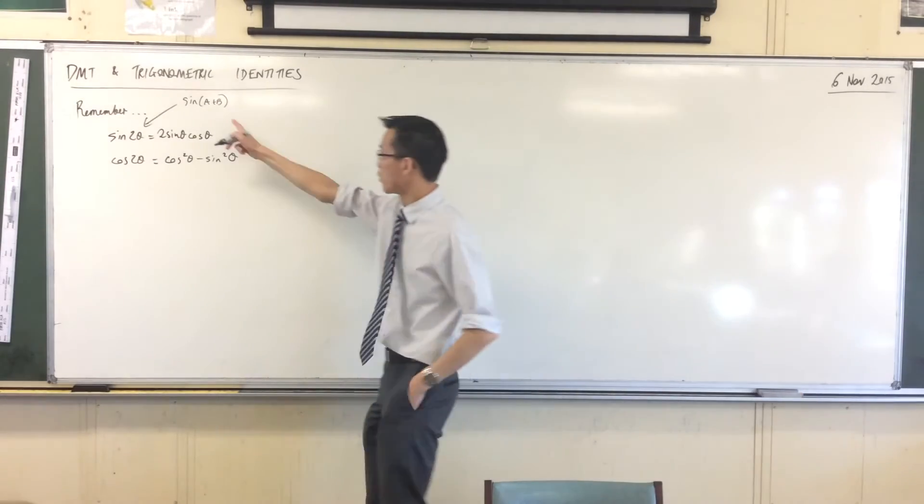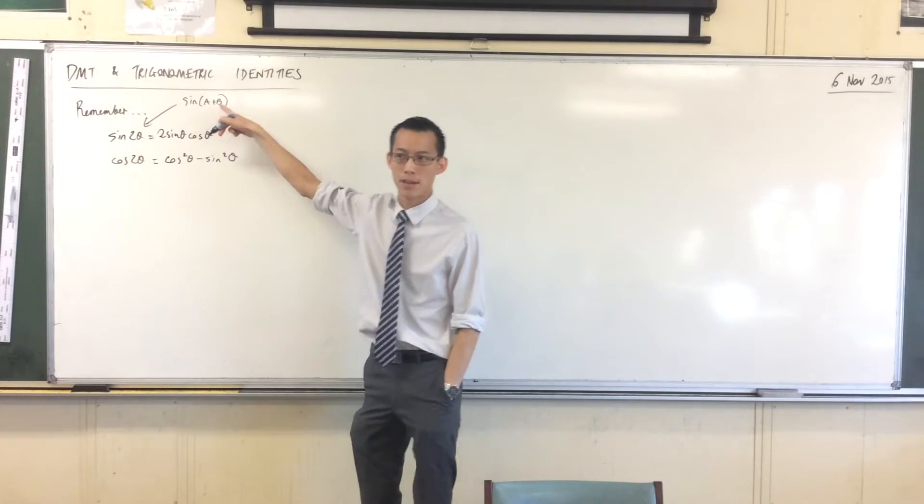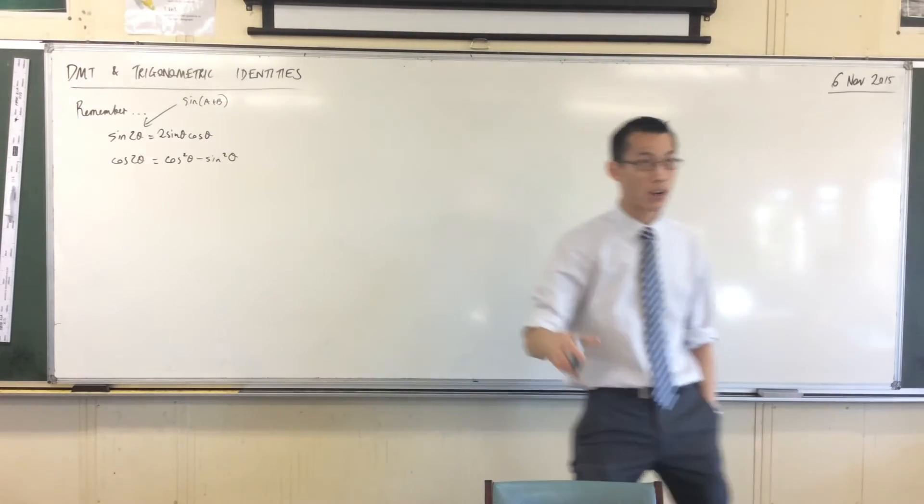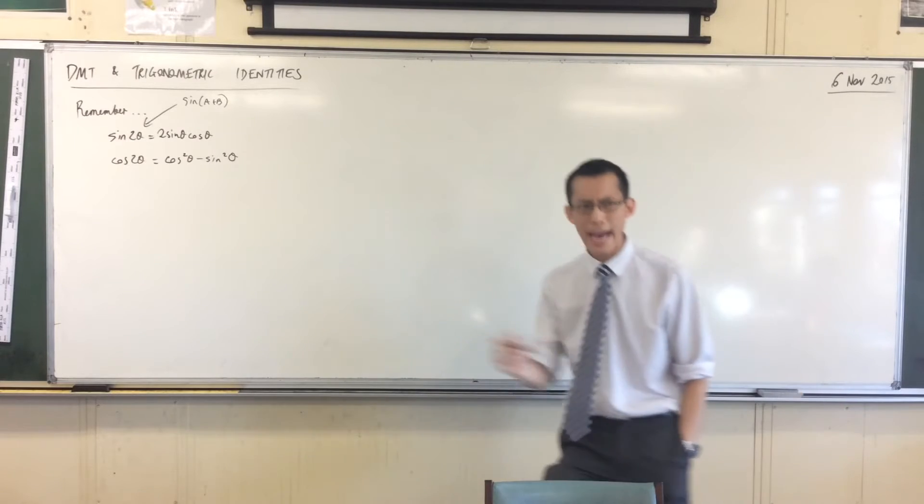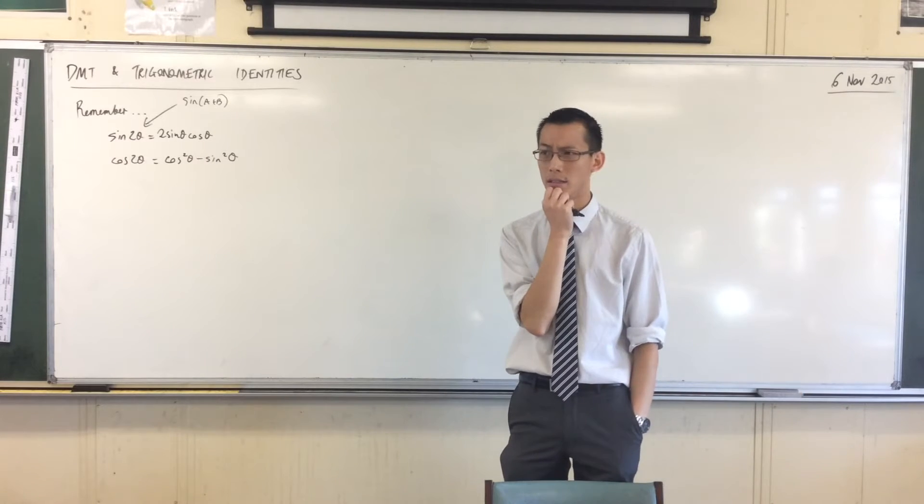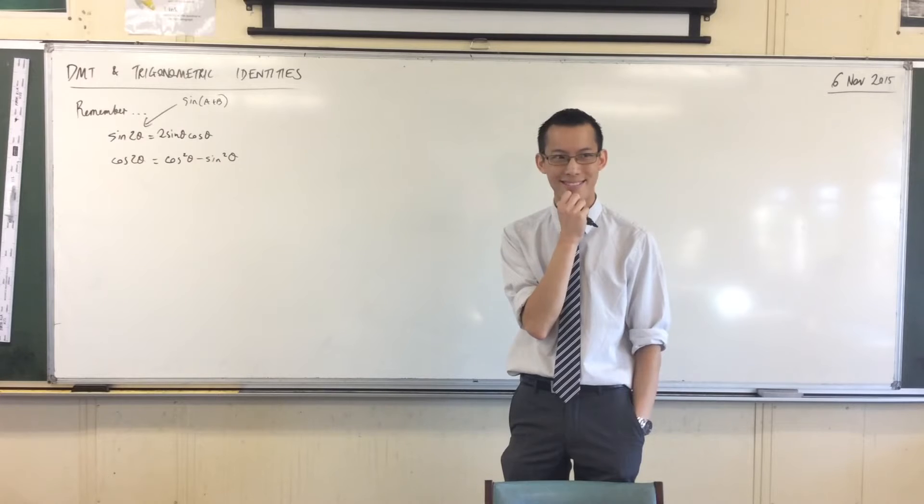Now, we have a result for this. Cos a sine b plus sine a cos b. That's the expansion and the corresponding one for cos. Where did that come from? Where did it begin?